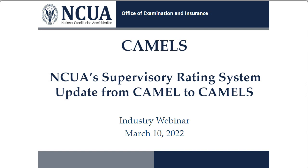Credit unions will experience significant changes this year because of revisions to the capital adequacy framework, call report, and CAMELS. To access assistance, you should first ask your examiner and supervisory examiner. If you need further assistance, there is a regional office, and additionally the office of examination and insurance — what we call E&I — can answer your questions.